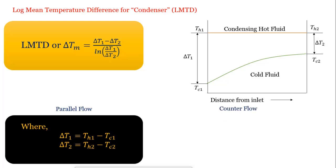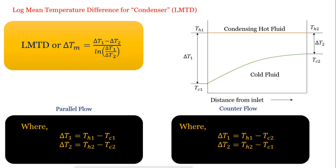And for counter flow, delta T1 equals TH1 minus TC2, and delta T2 equals TH2 minus TC1. But in the condenser, the main important part is TH1 equals TH2.